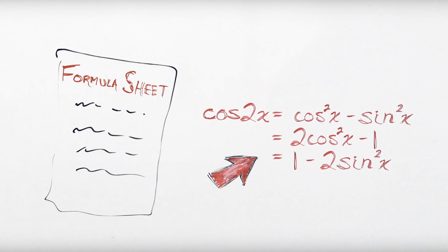Now this one's weird because your formula sheet might have three different versions of this identity. Curious where these come from? Stay tuned, find out! Or just save yourself the time and substitute in a rearranged version of the Pythagorean identity.